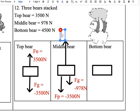So 3500 plus 978, we end up getting a normal force equal to 4478.